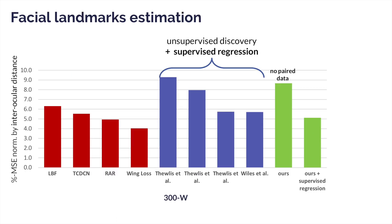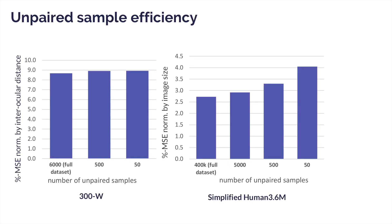We also outperform all self-supervised learning methods for facial landmarks. The method requires only a small number of unlabeled examples to train the discriminator. The figures show that keypoint detection performance is not sensitive to the number of unpaired samples, and can perform reasonably well with just 50 unpaired keypoint examples.